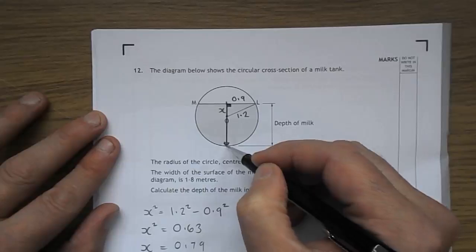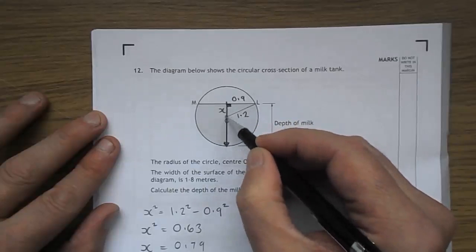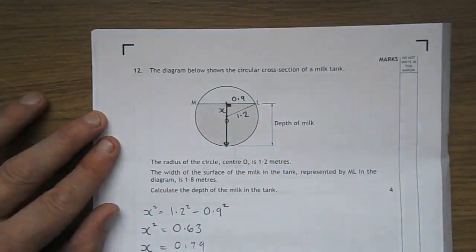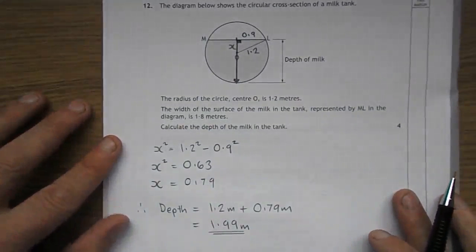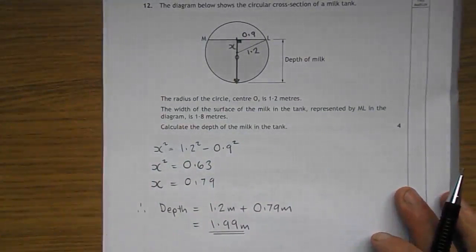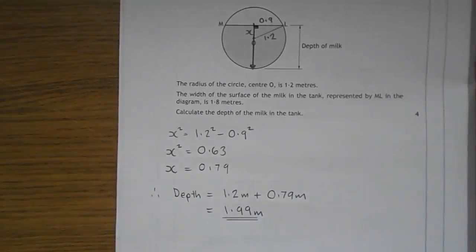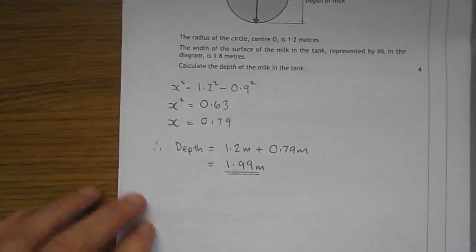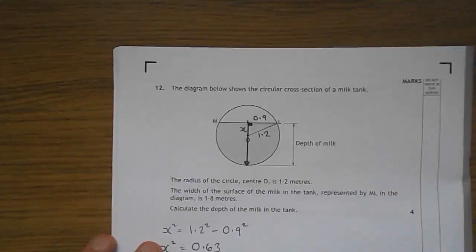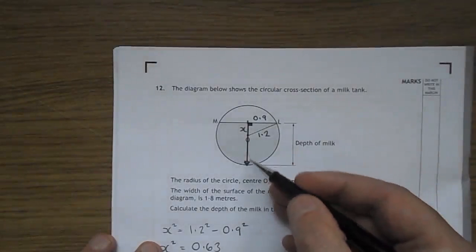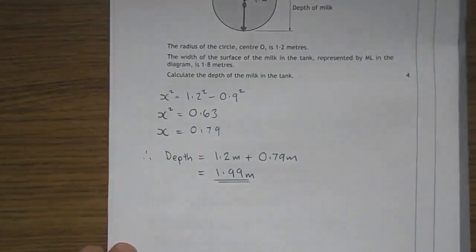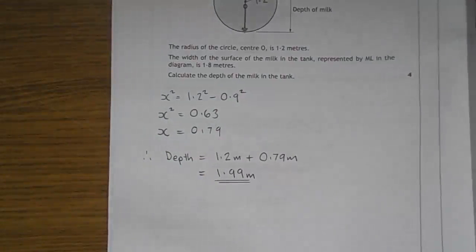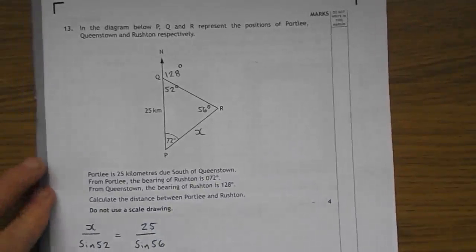There's 1.2 from the centre to there, plus this value here that I've called x. It's Pythagoras of course. So x squared is 1.2 squared, take away 0.9 squared. That gives you 0.63. Take the square root 0.79. So the depth of water is the 1.2 plus the 0.79. The 1.2 centre to the bottom plus 0.79. And you get, well I get, 1.99 metres.